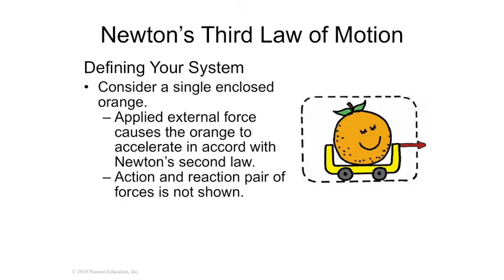The challenge in finding the action-reaction pair is that sometimes they're not always obvious. For example, if an orange is inside a cart, there's nothing the orange can do to make the cart go forward, because the orange can't put a force on itself. In order for the cart to go forward or backward, a force has to be exerted from the outside — either a pulling force or a pushing force.